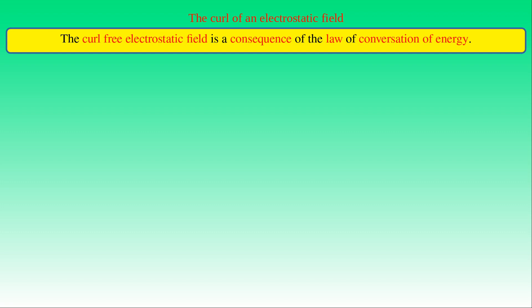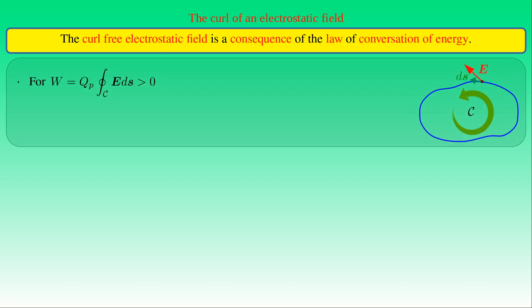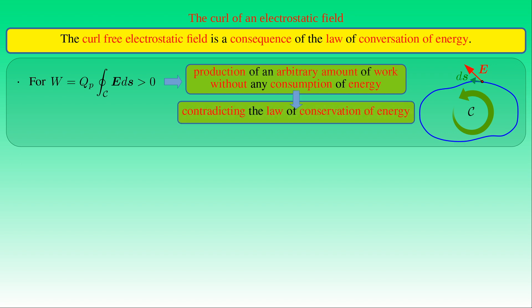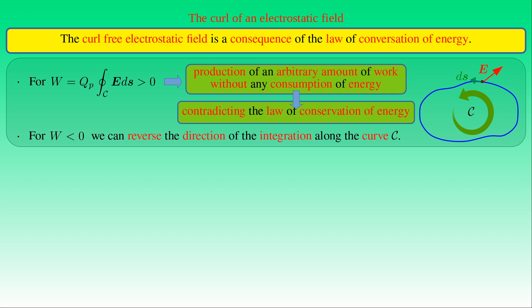The statement that the electrostatic field is curl-free follows from the law of conservation of energy. If the work W done while test charge QP is brought along a closed curve C were greater than zero, an arbitrary amount of work could be produced without any energy consumption, since neither QP nor the electrostatic field change during the motion along the closed curve. This contradicts conservation of energy, so the line integral cannot be greater than zero. By the same argument applied in the reverse direction, it cannot be less than zero either. Therefore, conservation of energy implies the work W along a closed path must be zero.